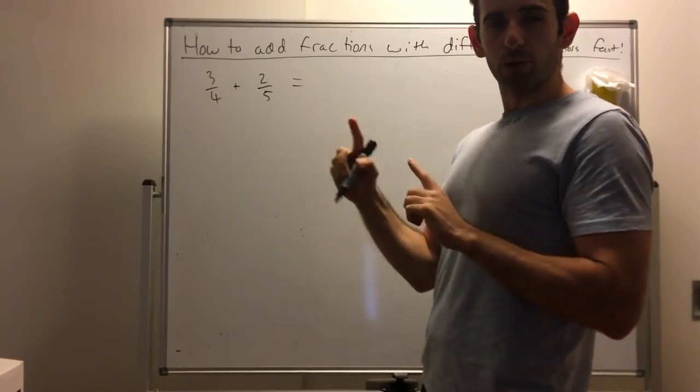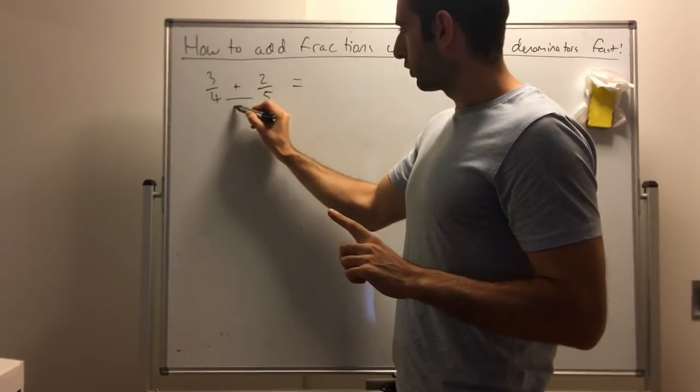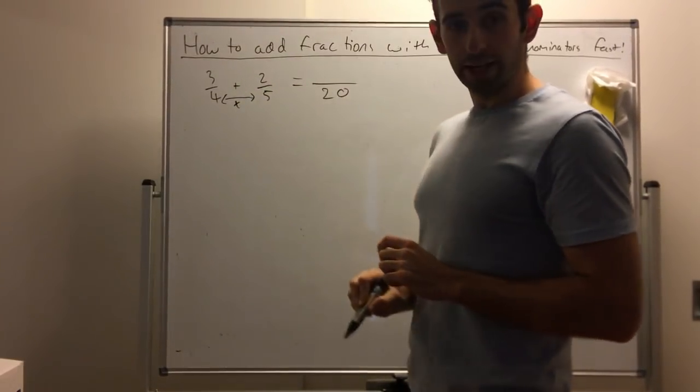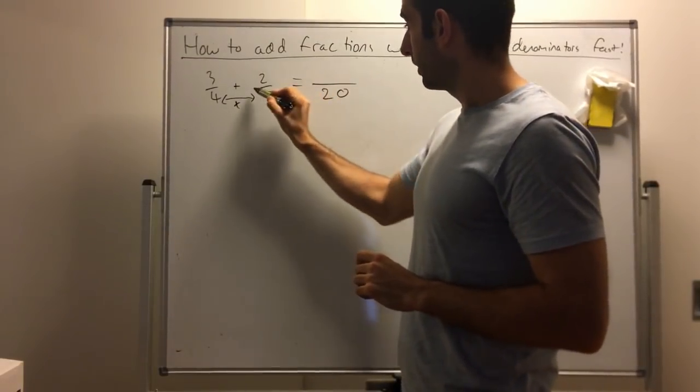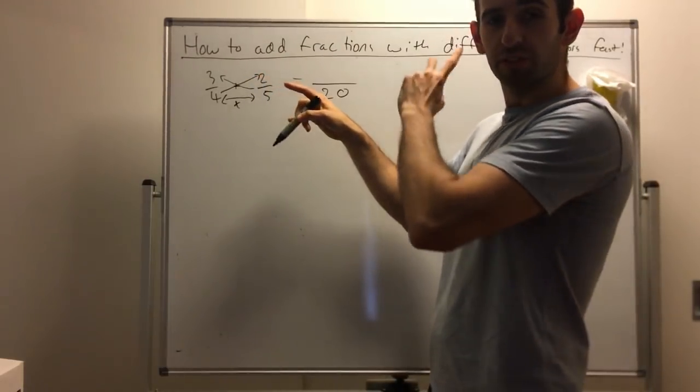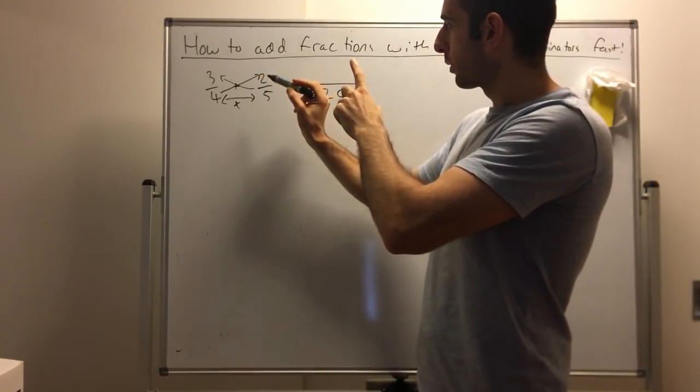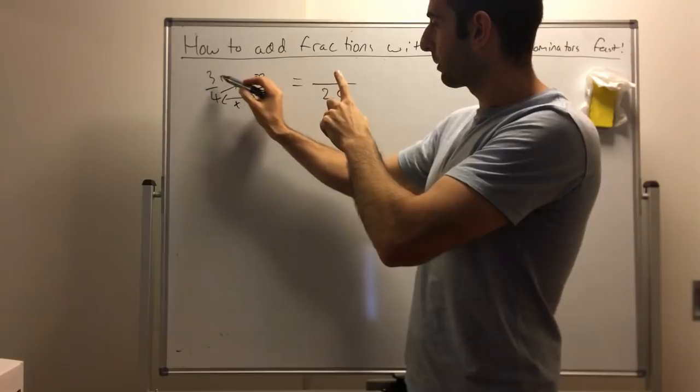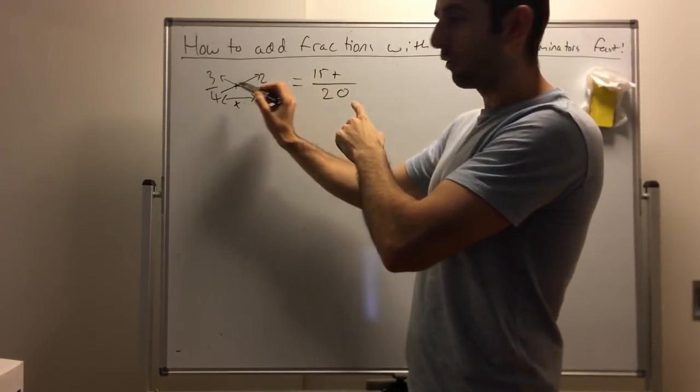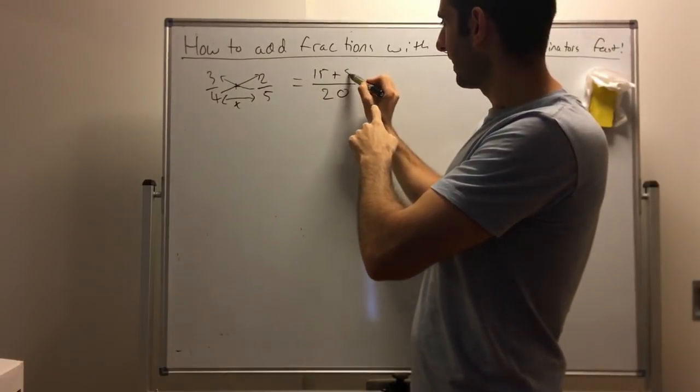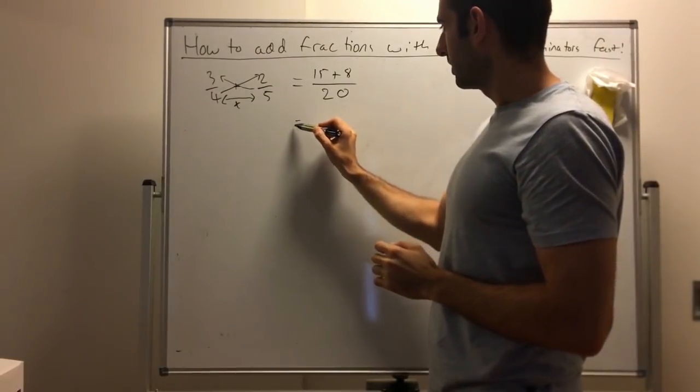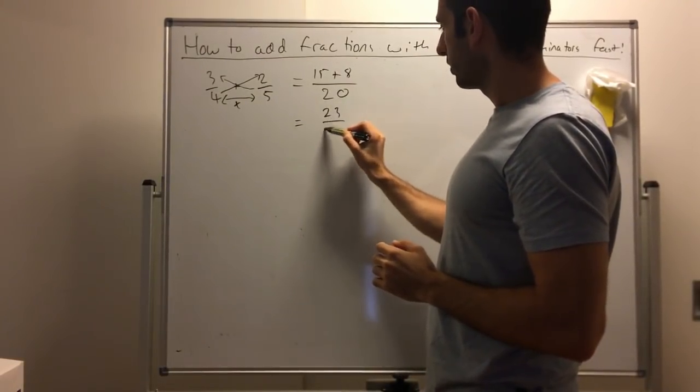We're going to use cross-multiplying. You times these together, that's your new denominator. To get what's on top, cross-multiply the first numerator with the opposite denominator, 15, plus the second numerator with the opposite denominator, 2 times 4, 8. Then times the bottoms together. So we get 23 on 20.